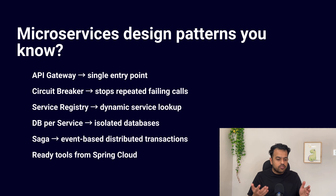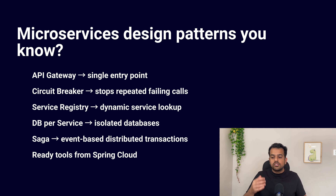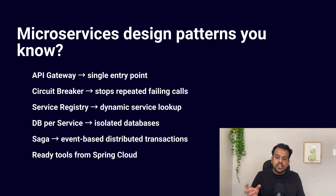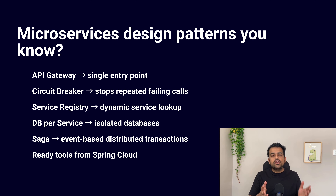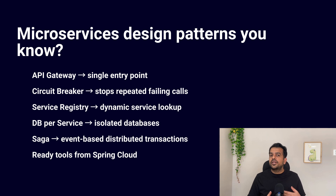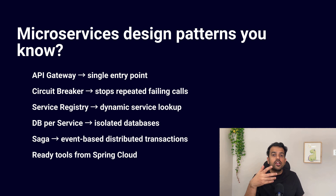For example, if multiple microservices each have their own DB operations and there is a failure in the second microservice, you have to roll back the DB operation of that microservice and the first microservice as well — that is why we use the Saga design pattern. If you remember and explain these patterns clearly, even with just one-line use cases, it gives the interviewer a strong signal that you have actually worked with these patterns.